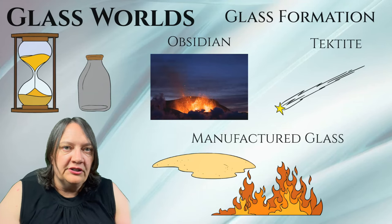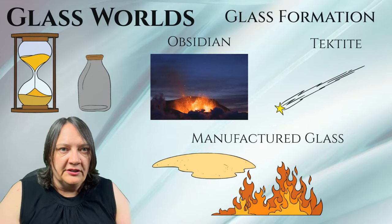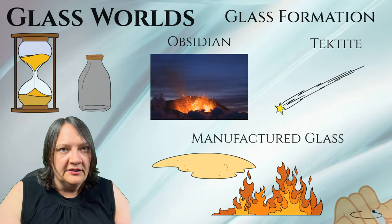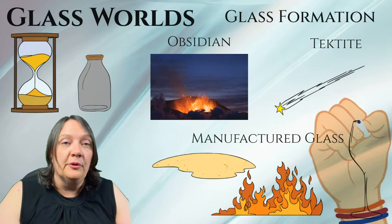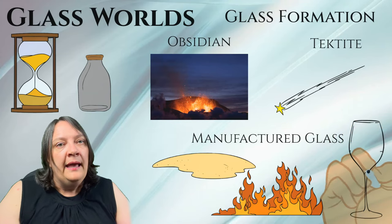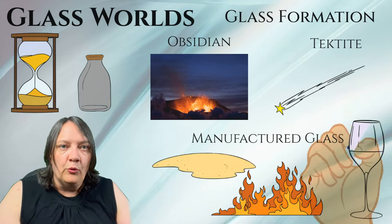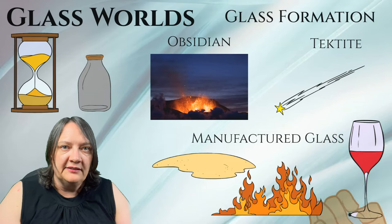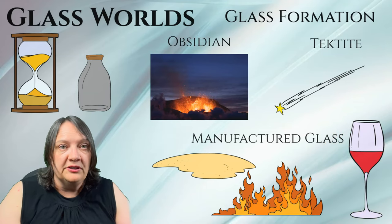For example, you can add metal oxides to produce colored glass: iron will tinge glass green, cobalt will make blue glass, manganese will produce purple glass, and so on. Adding materials like boron, barium or lead can change the refractive index, thermal expansion or other properties of glass.